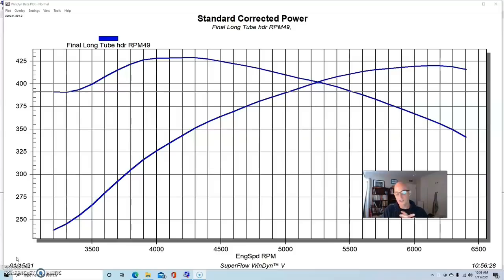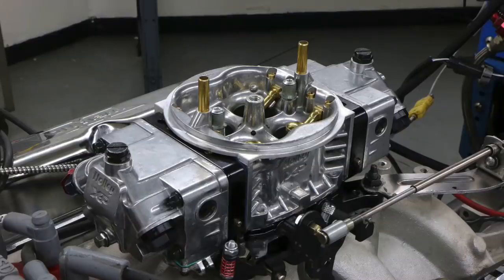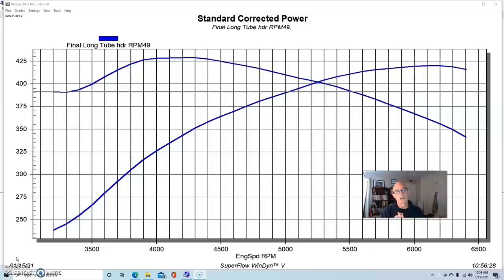We ran both of these combinations with the same 750 Holley XP carburetor. We also ran a Brawler carburetor on this, and that video is up also. You guys can check that out where we compared a low dollar carburetor to the high dollar carburetor. And in these combinations where we're not making a ton of power, the Brawler carburetor, which is a good option, makes every bit as much power as the real expensive XP carburetor. So it was kind of cool.